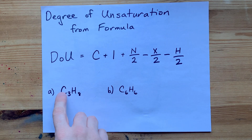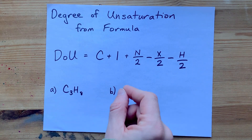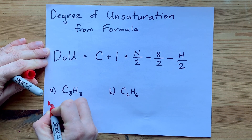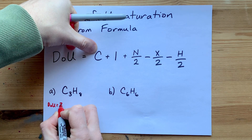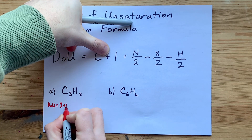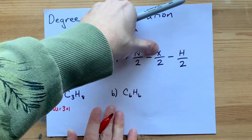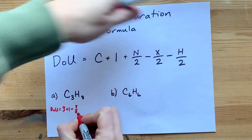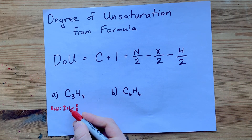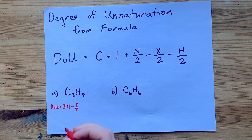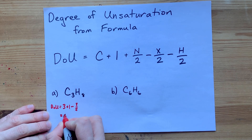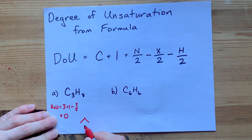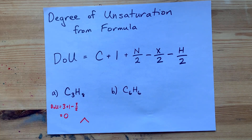Let's try it five times. For C3H8, which is a saturated alkane: the degree of unsaturation is the number of carbons plus 1, which is 3 + 1 = 4, minus the number of hydrogens over 2, which is 8/2 = 4. That gives 4 − 4 = 0. And if you look at the molecular structure, there are no double bonds, triple bonds, or rings in that molecule.